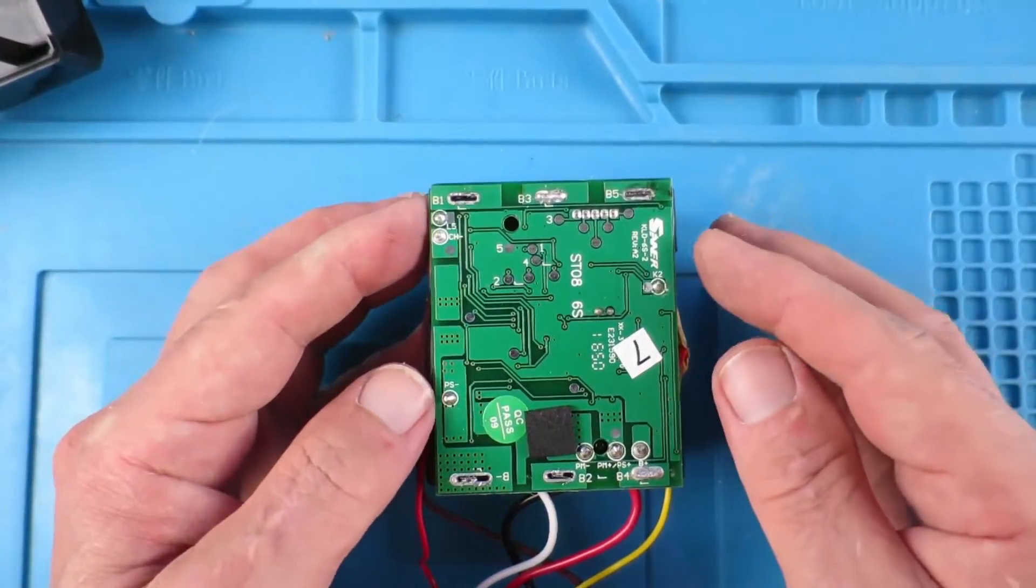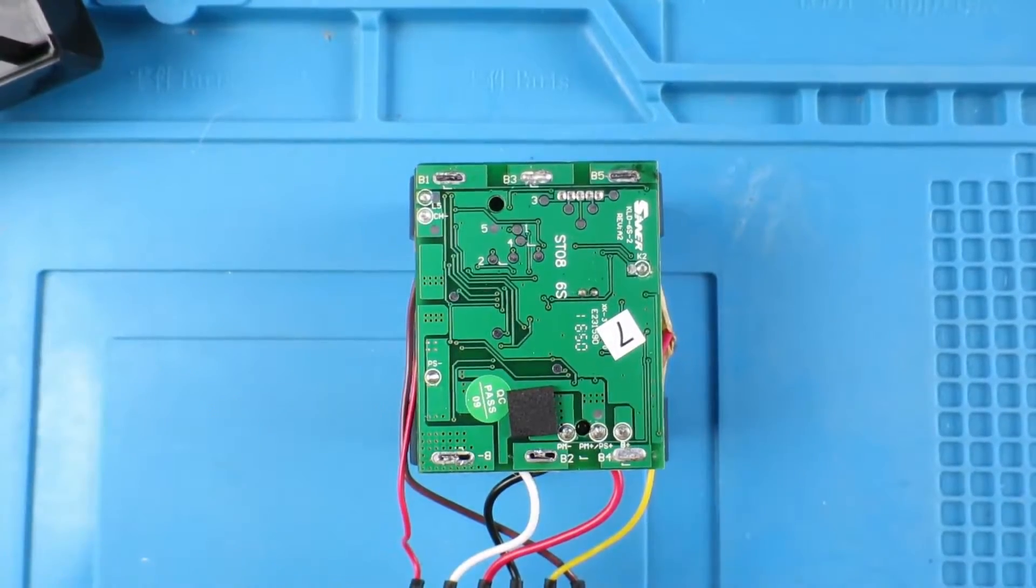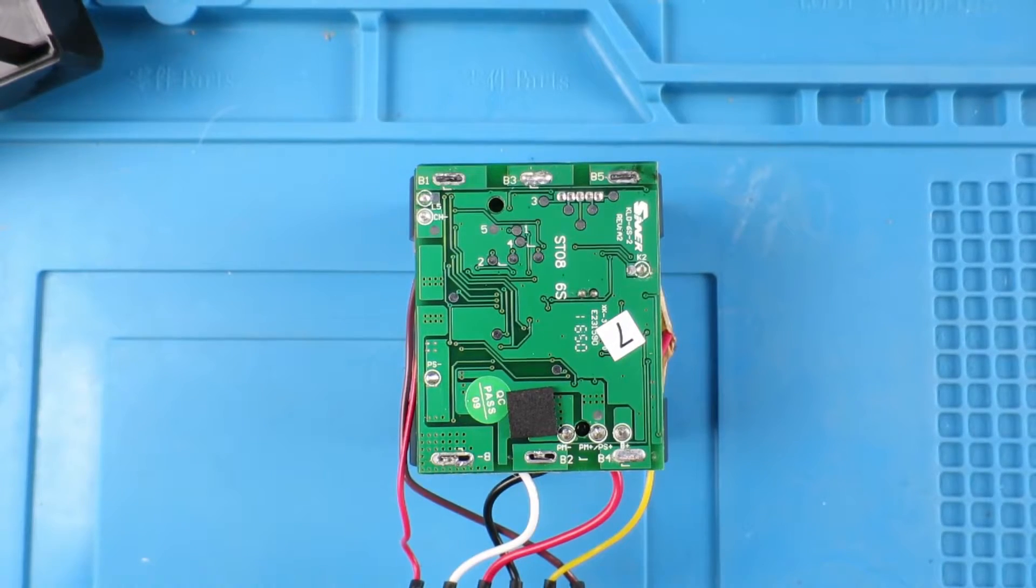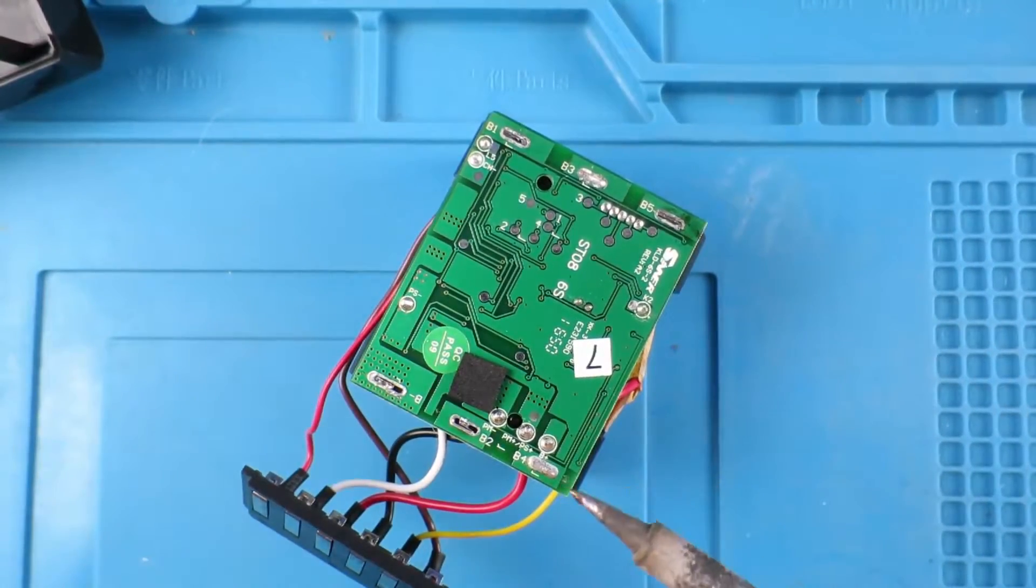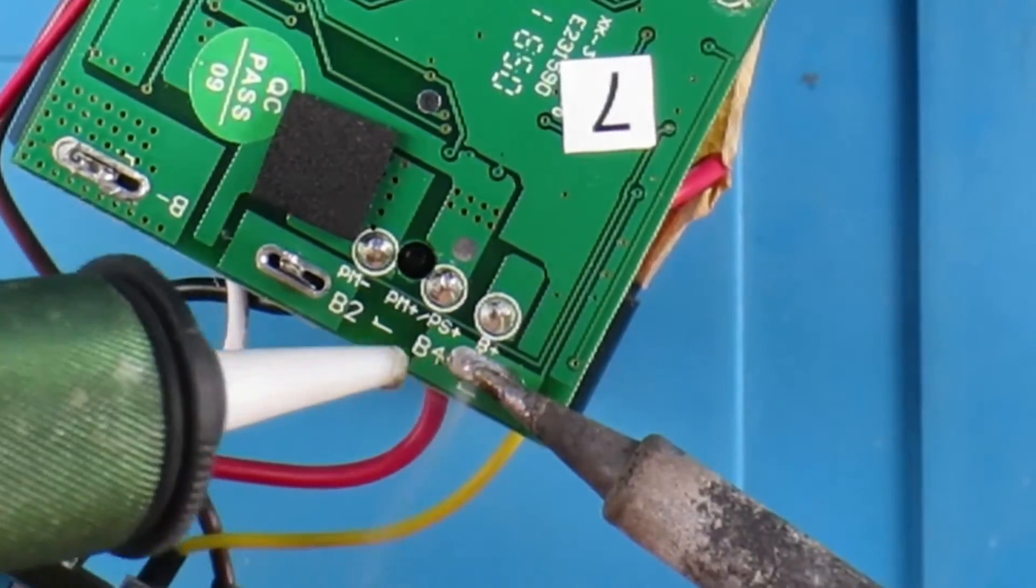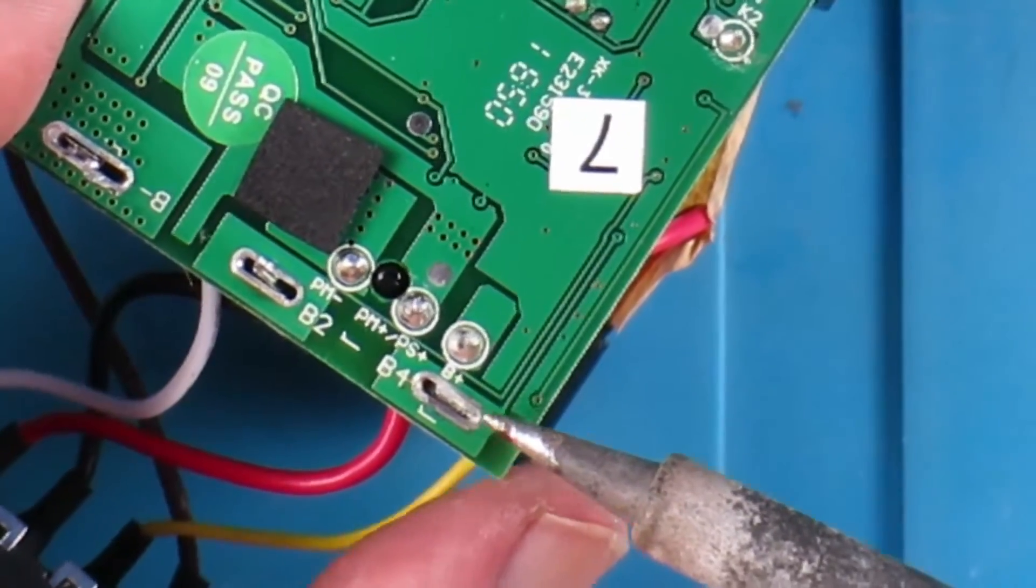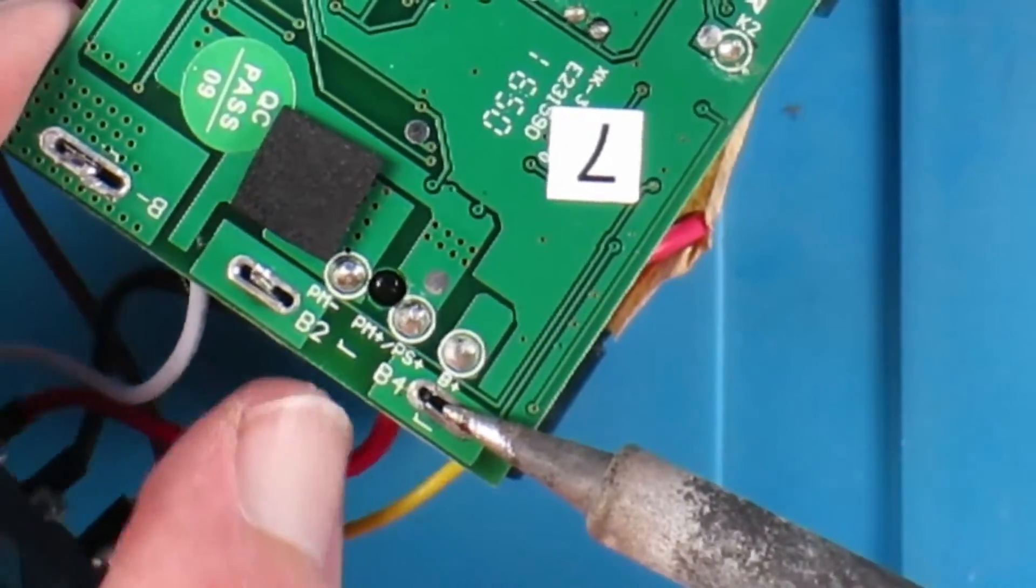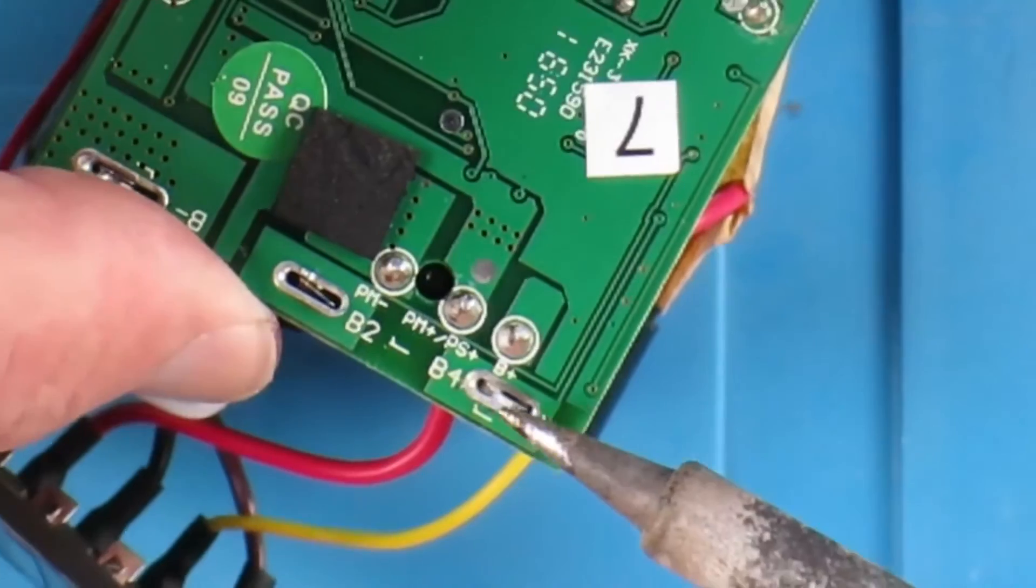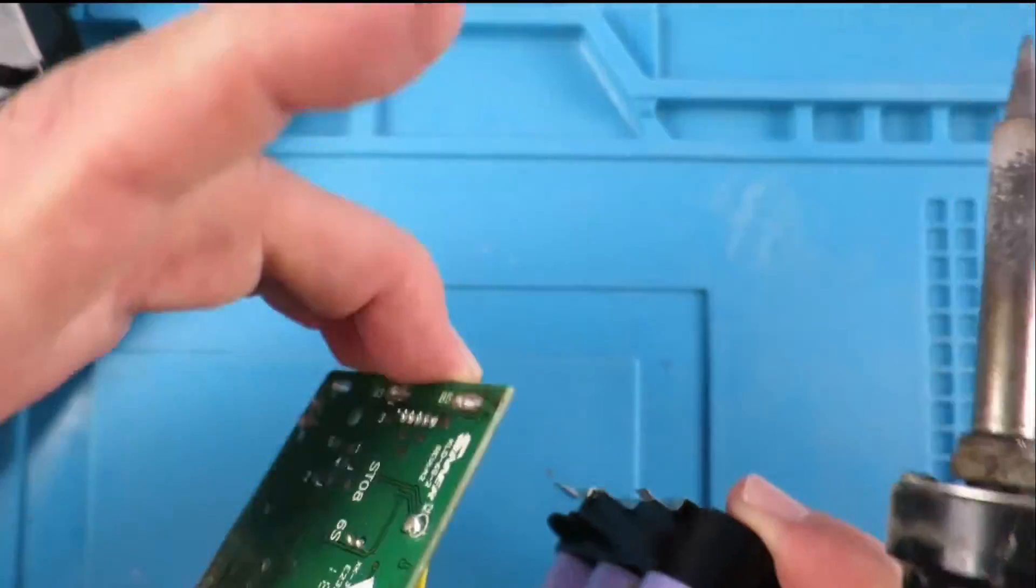I've already desoldered all except one of the connections now. I just thought I'd show you my technique here. With a well-tinned soldering iron, sometimes it's counter-intuitive. You actually have to apply some solder to remove some solder. And you can see with the solder sucker it's removed the solder pretty much from all of the contact. And then it's simply a matter of gently levering it up.